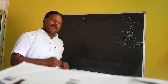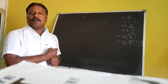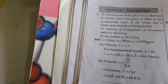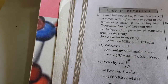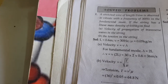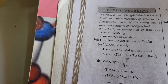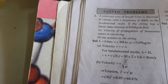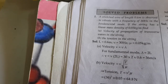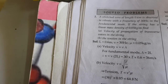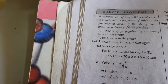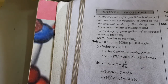Let's discuss a very important problem. A stretched wire of length 0.6 m is observed to vibrate with a frequency of 30 Hz in the fundamental mode. If the string has a linear density of 0.05 kg per meter, find: first, the velocity of propagation of transverse waves in the string; second, the tension in the string.